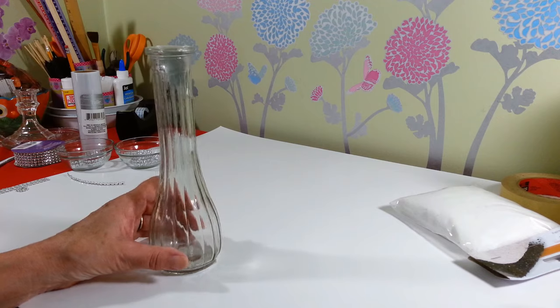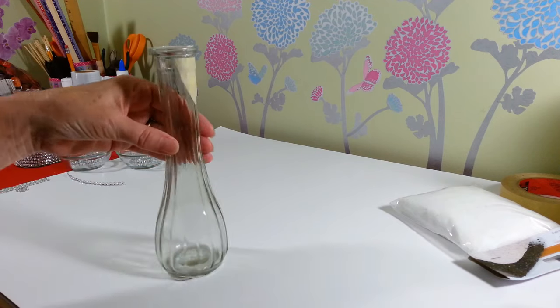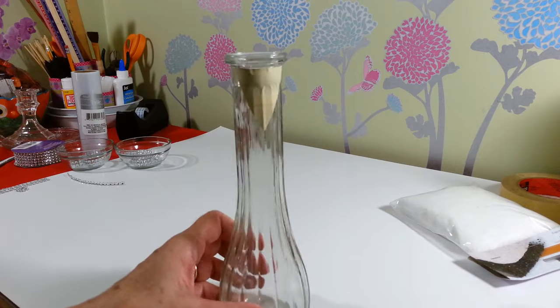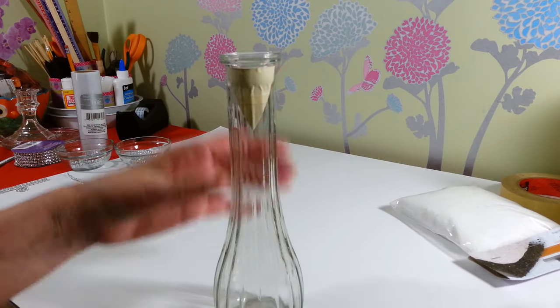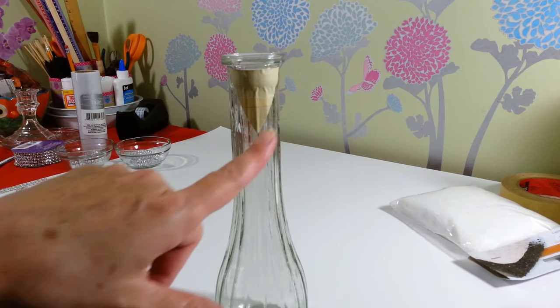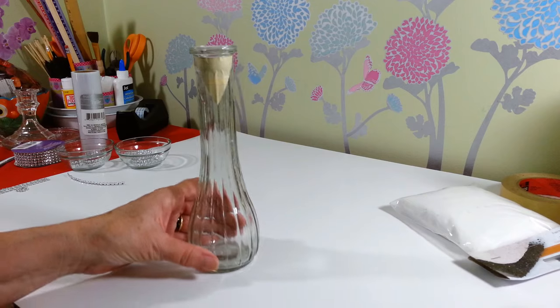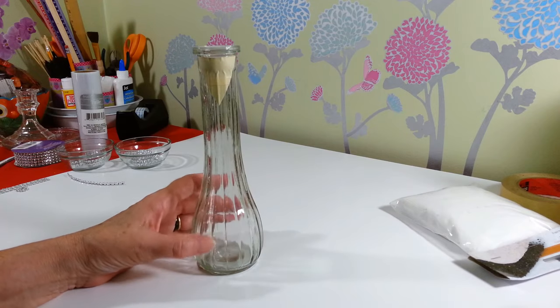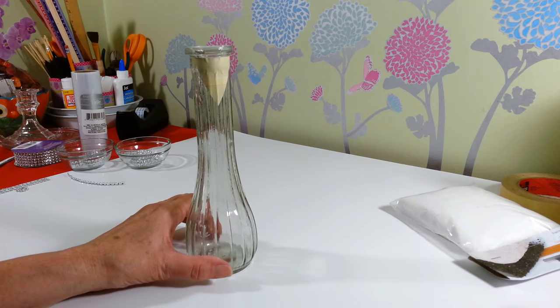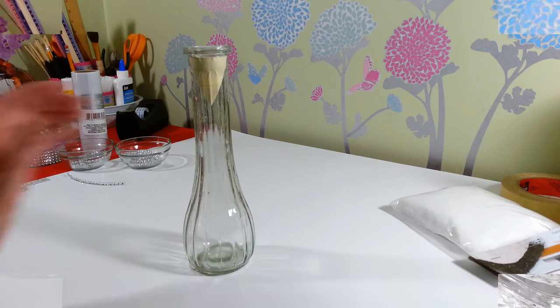So first you're going to need a little bud vase. I picked this up at the Dollar Tree and then I cut out a little V shape out of tape and tape that onto the top here so that'll be our little neckline for our wedding dress. And I'm going to take this outside and put a couple of coats of white paint on the outside of the vase and then I'll show you our next step.